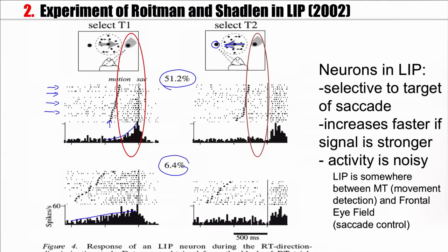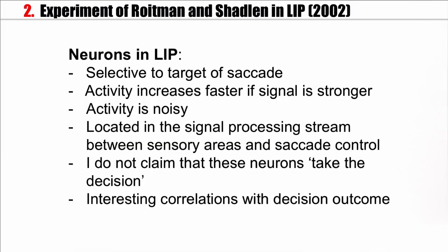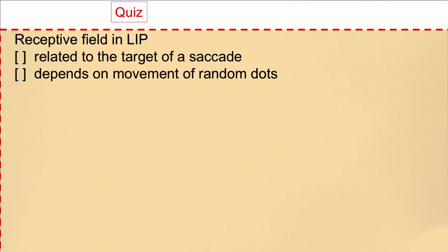To summarize: neurons in LIP are selective to the target of the saccade. Their activity increases faster for stronger signals, and the activity is very noisy. These LIP neurons are located somewhere in the signal processing stream between the sensory areas and saccade control. I would not claim that these neurons take the decision, but there is an interesting correlation between the decision outcome and the activity of neurons in LIP. Before we go on, just one question of quiz — please take your time.